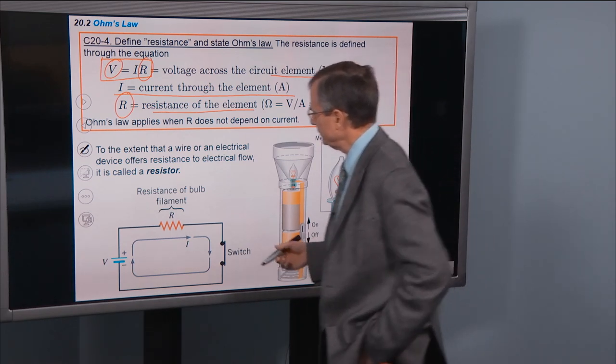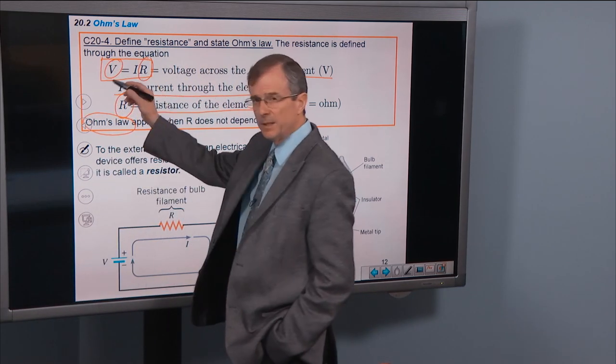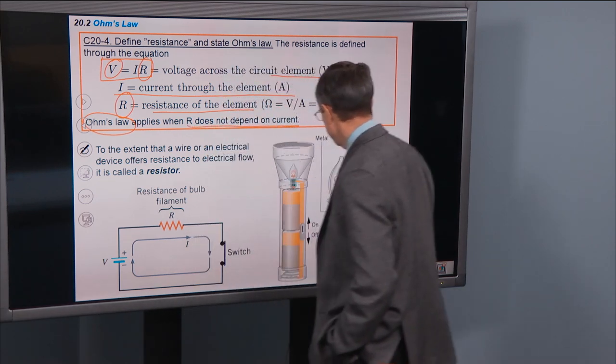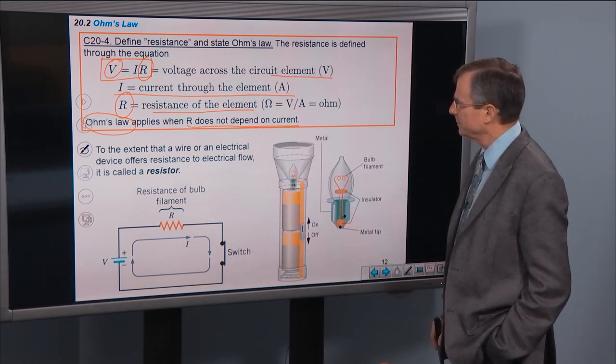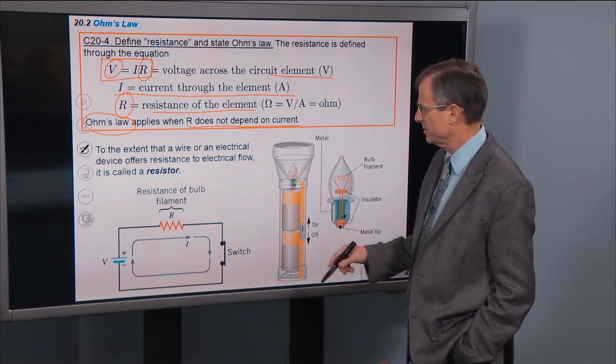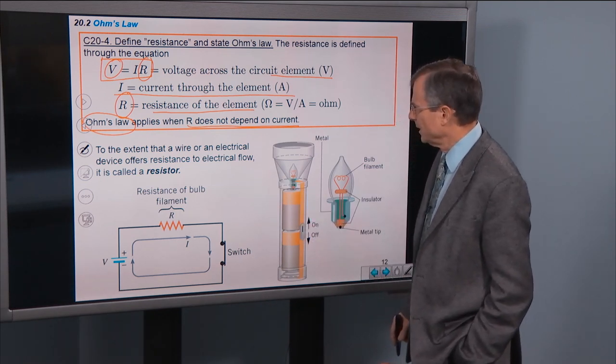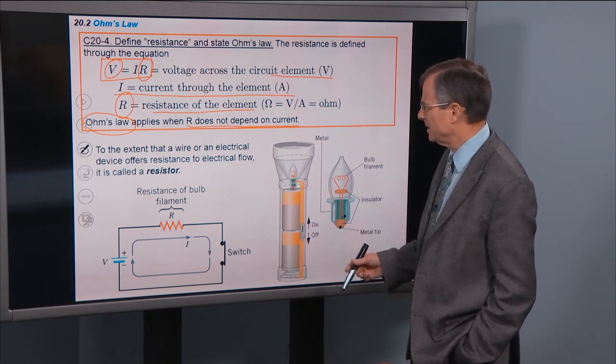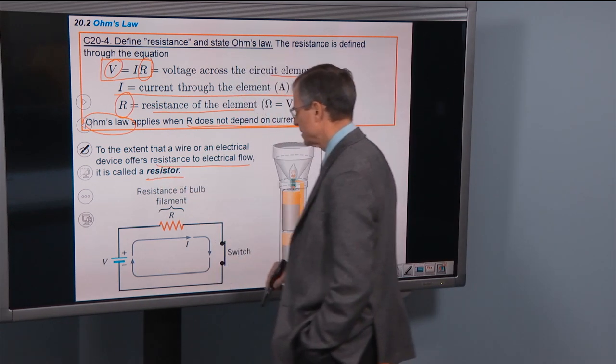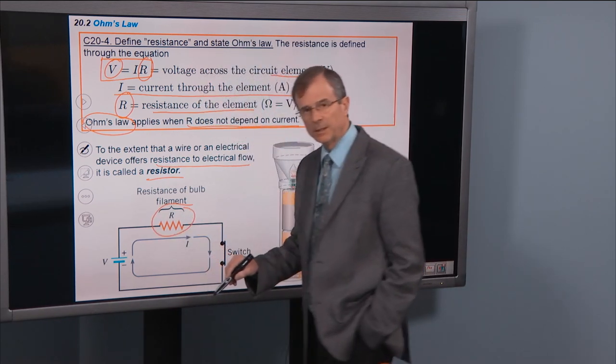What's Ohm's Law? Ohm's Law is related to this equation and it applies when R does not depend on the current. But if you have an element that offers some resistance to electrical flow, it's called a resistor. And we denote that in our circuit diagrams by a little squiggly line.